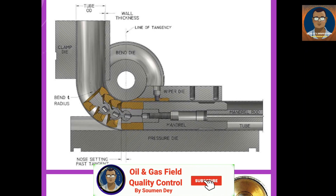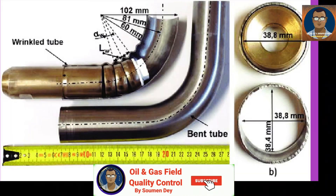Mandrel tube bending: mandrel bending method produces precise results with very few deformations on tubes or pipes. It can also handle thin materials without breaking, due to the internal support it uses during the process. A flexible mandrel is put inside the tube shaft to prevent deformation while forming the material through a bending die. Mandrel bending is generally applied to create exhaust pipes, heat exchangers, and dairy tubing.